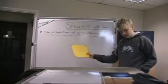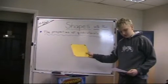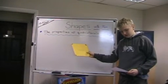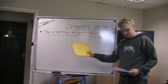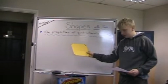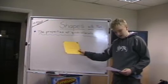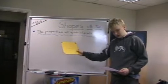A rhombus has got four sides of equal length, and opposite sides are parallel and angles are equal.